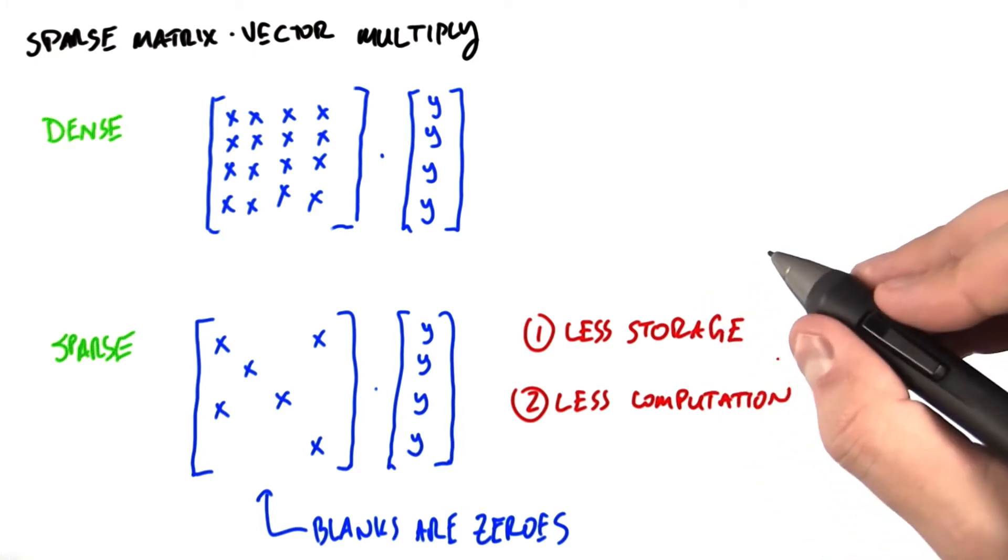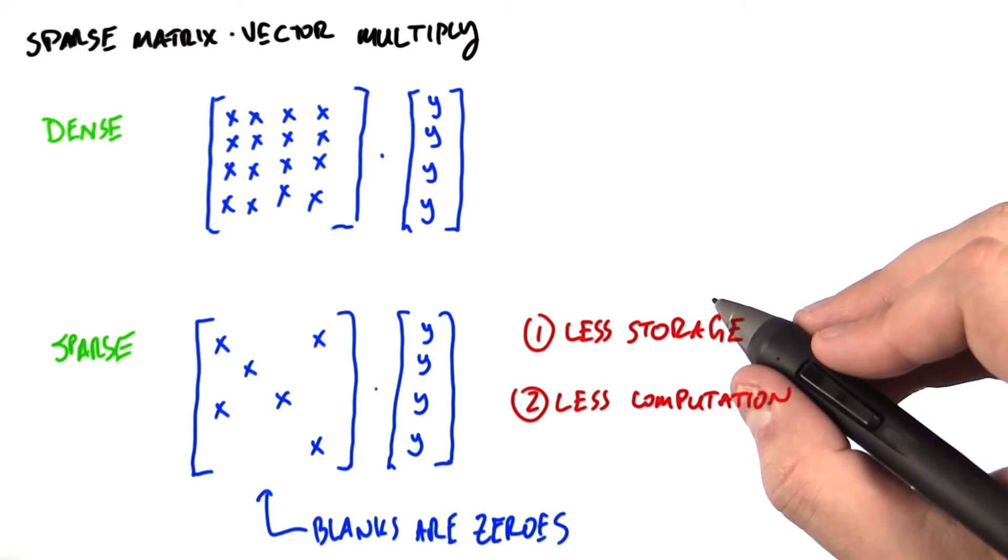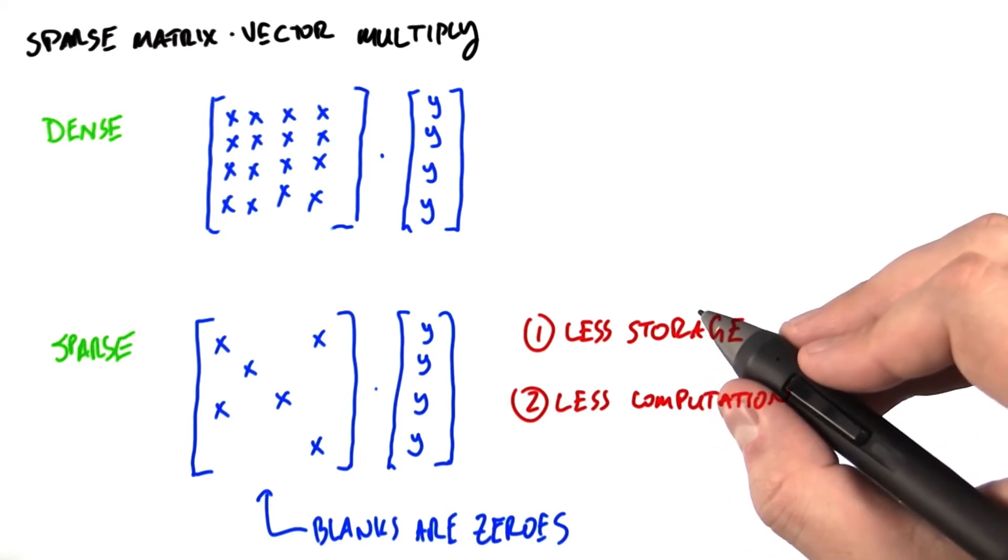One, less storage, since we don't have to represent a bunch of zeros. And two, less computation, since we're not doing a bunch of multiplications and additions of zeros.